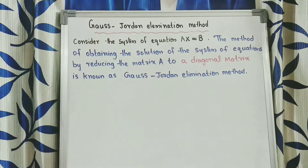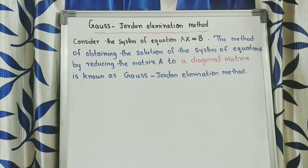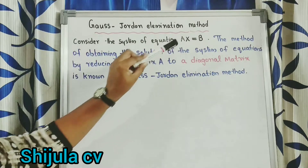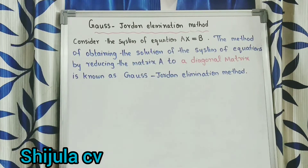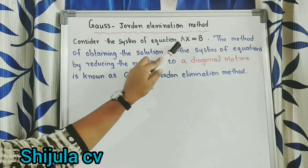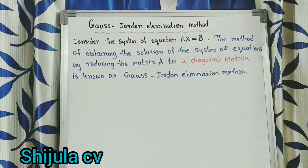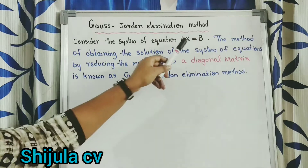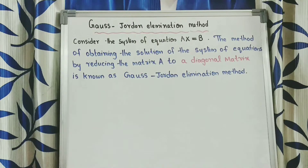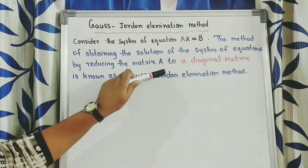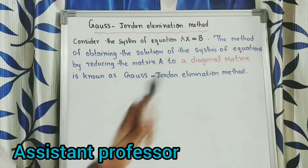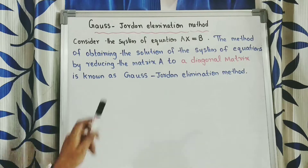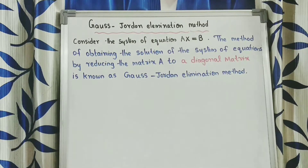Gauss-Jordan Elimination Method: What is Gauss-Jordan Elimination Method? Consider the system of equation AX equal to B. The method of obtaining the solution of the system of equation by reducing the matrix A to a diagonal matrix is known as Gauss-Jordan Elimination Method.